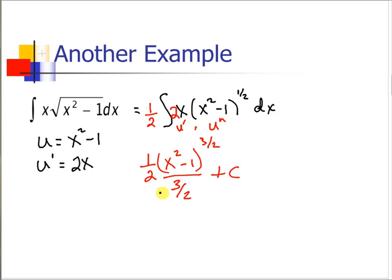If we simplify this complex fraction it becomes 1/2 times the reciprocal here so we get 4/3 plus c. Again that's our answer.